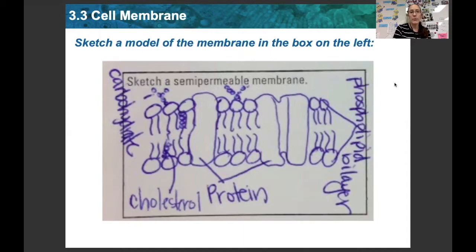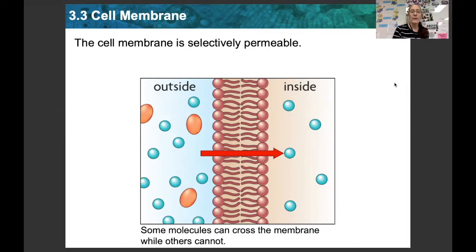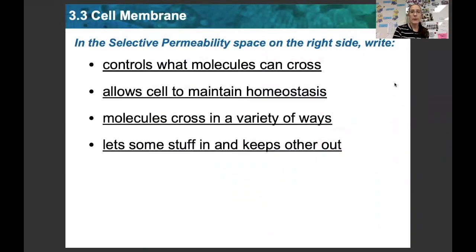Selectively permeable means that the cell keeps some things on the outside and allows some things to come inside. For example, water — the small blue sphere — is able to pass right through the cell membrane, whereas the larger orange oval molecule cannot. In the space on the right that says selectively permeable, please write: selectively permeable means it controls what molecules can cross the plasma membrane, allows the cell to maintain homeostasis, and molecules can cross in a variety of ways — either straight through the membrane or with help from a protein.